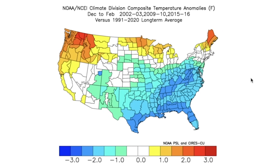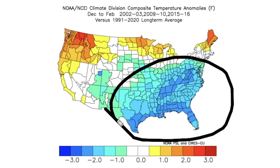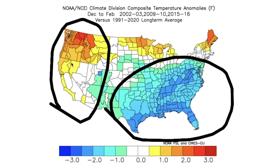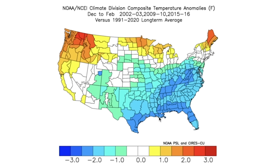The full December through February outlook for all of these analog years features overall colder conditions in the southeast and warmth along the west — again, positive PNA. We do see some warmer temperatures in the upper Midwest and northeast, but the further south you go toward the Gulf Coast, the colder things get, which is important to note.